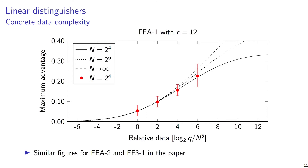You can do a better and more accurate calculation of the data complexity. Here I show a plot of the maximum advantage — the maximum success probability minus false positive rate — achievable for a given amount of data. In the case of the simple linear distinguisher, the zero on this graph corresponds to N to the power of R/2 minus 1 data, so N to the power of 5. However, even for a large amount of data, we don't achieve an advantage of 1, because we might have bad luck choosing the mask — for some keys it may not have a large correlation.